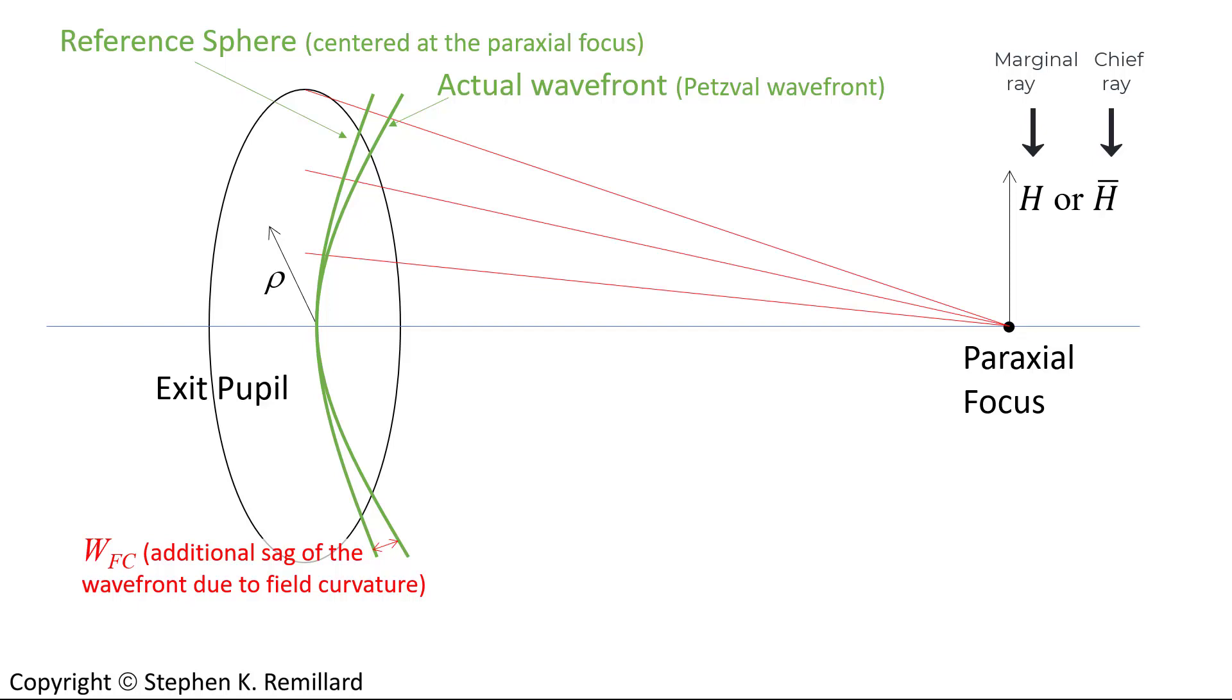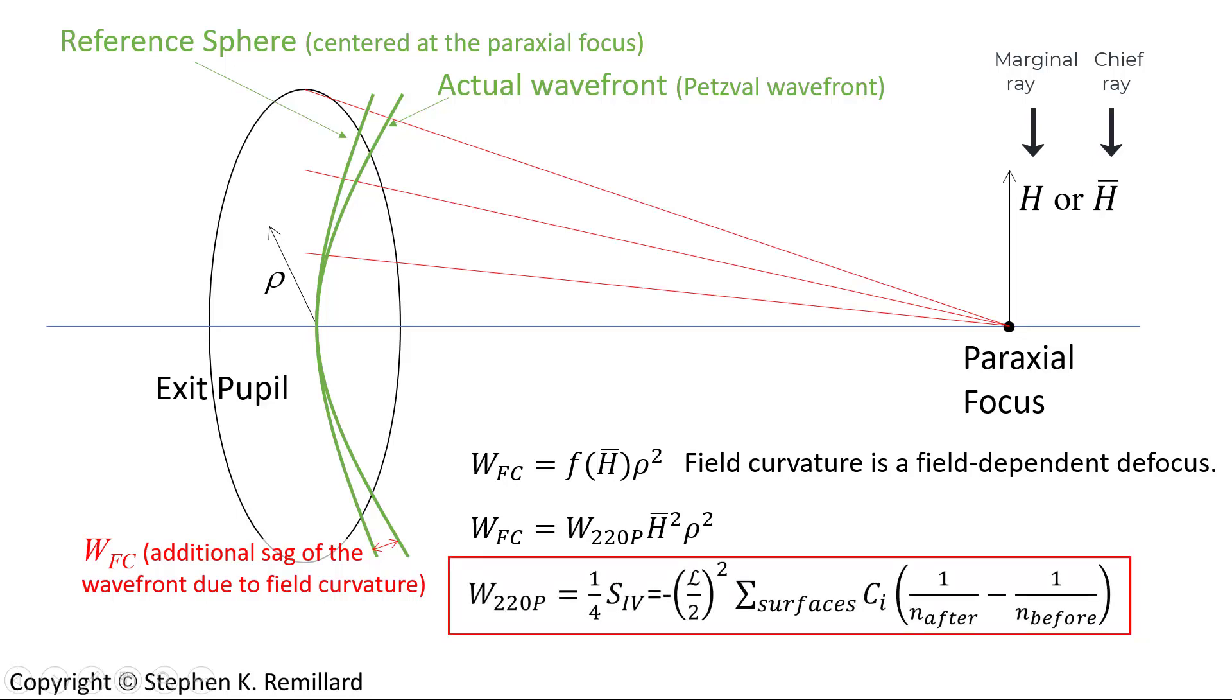So it is a field-dependent aberration expressed as the pupil coordinate squared times the function of the normalized field coordinate for the chief ray, F of H bar. And more specifically, field curvature is quadratic in the field coordinate. Where W sub 220P is the coefficient for field curvature. And it is related to the Seidel coefficient for field curvature with a factor of 4. S sub 4 is the Seidel coefficient for curvature field, or Petzval curvature. We are going to compute the Seidel coefficient, S sub 4, using the curvatures of the surfaces and the refractive indices. It is given by minus the Lagrangian invariant over 2 quantity squared times the sum of the curvatures times the change in 1 over the refractive index. That is a mouthful.